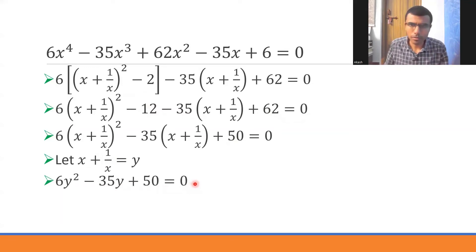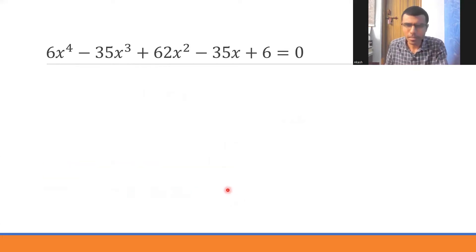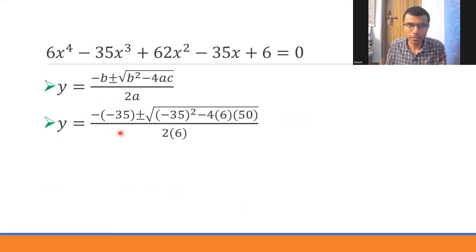If you can do factorization, well and good, or you could do the formula method which I'm going to teach here. Here a is 6, b is -35, and c is 50. The standard formula x = (-b ± √(b² - 4ac))/2a. Instead of x we have y here. So just substitute.